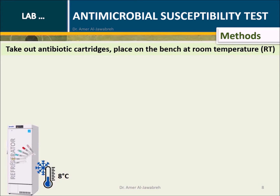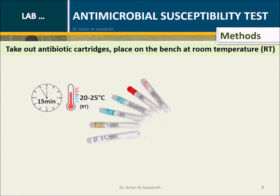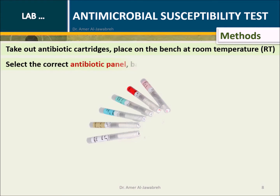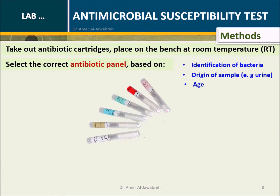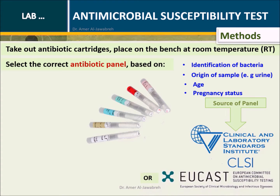Method: Take out antibiotic cartridges and place on the bench at room temperature. Select the antibiotic panel based on identification of bacteria, origin of sample, age, and pregnancy status. The source of the panel is CLSI or EUCAST.